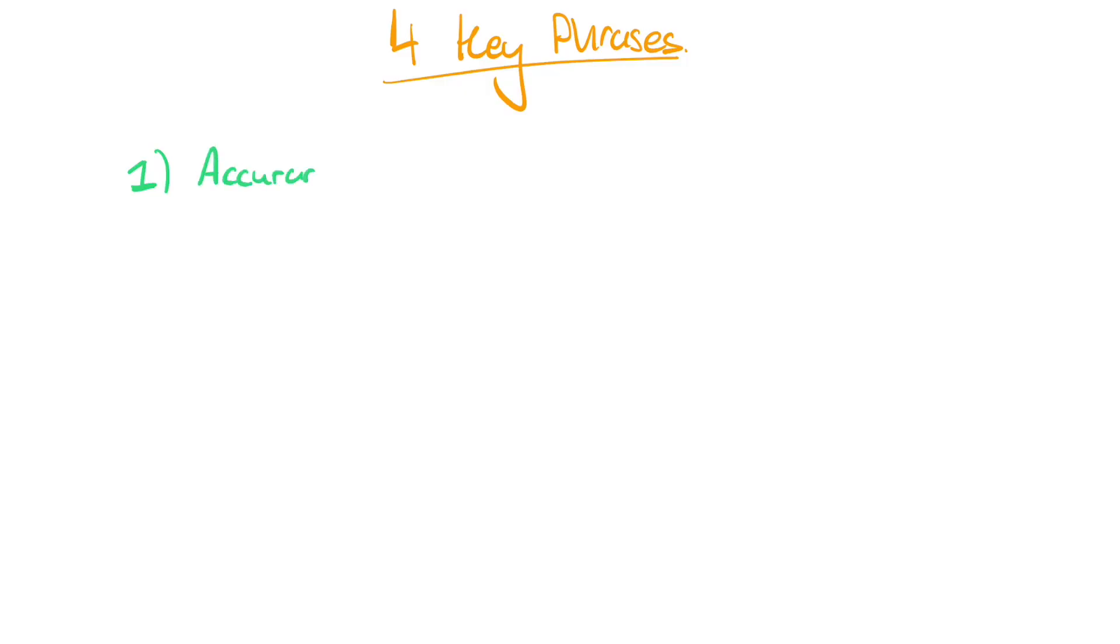Now, definitions of key phrases. I won't lie, this is by far the worst part of this topic because it's quite simply just remembering a bunch of definitions. So, accuracy. A measurement or result is considered accurate if it is judged to be close to the true value. So, how close your result is to the real value in English.